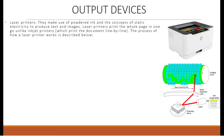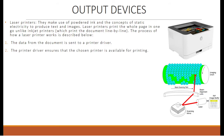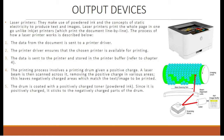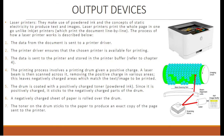The process of how a laser printer works: First, the data from the document is sent to a printer driver, which ensures the chosen printer is available. The data is then sent to the printer and stored in the printer's buffer. The printing process involves a printing drum given a positive charge. A laser beam is then scanned across it, removing the positive charge in various areas, leaving negatively charged areas which match the text or image to be printed. The drum is coated with a positively charged toner, or powdered ink, which sticks to the negatively charged parts of the drum. A negatively charged sheet of paper is then rolled over the drum, and the toner sticks to the paper to produce an exact copy of the page.